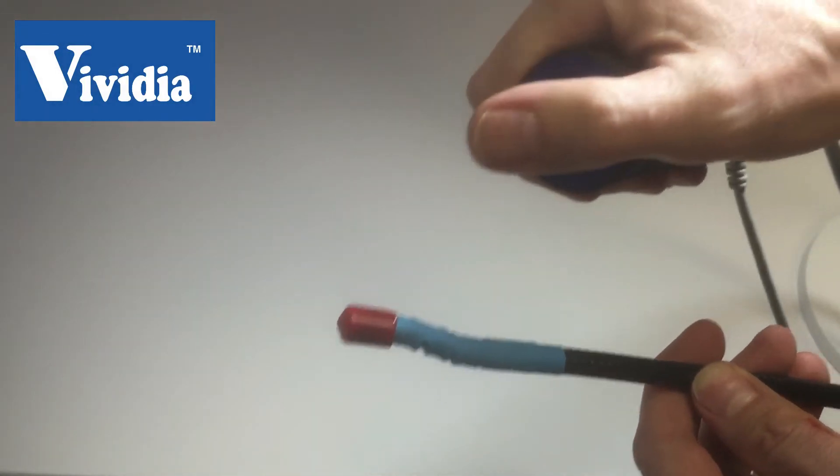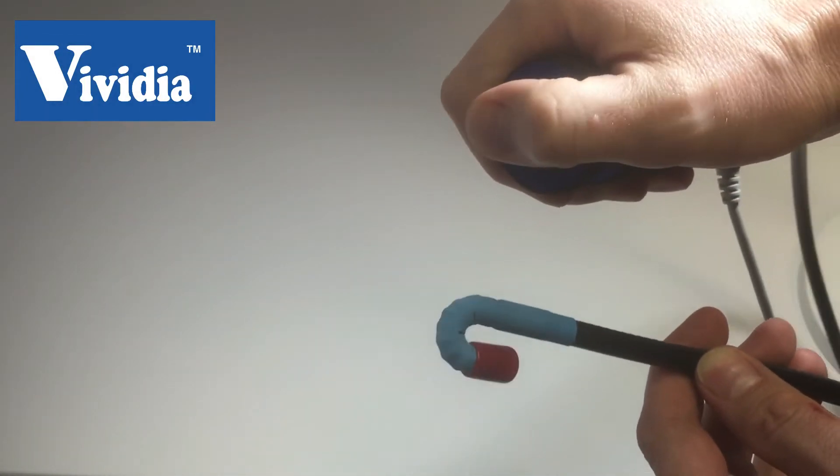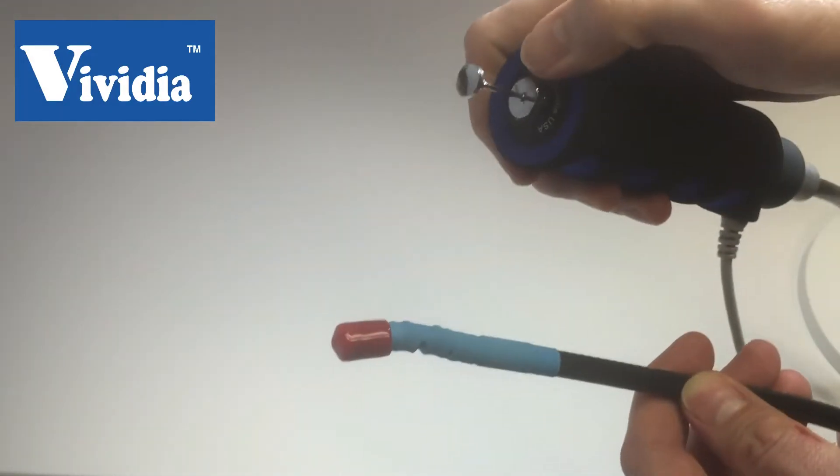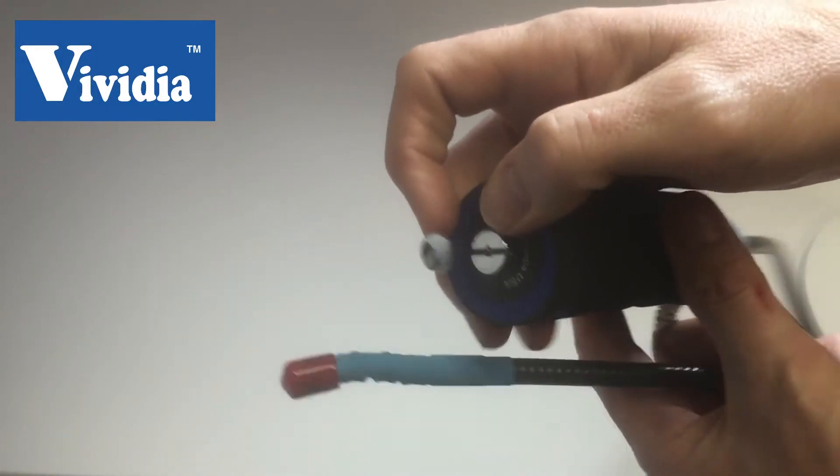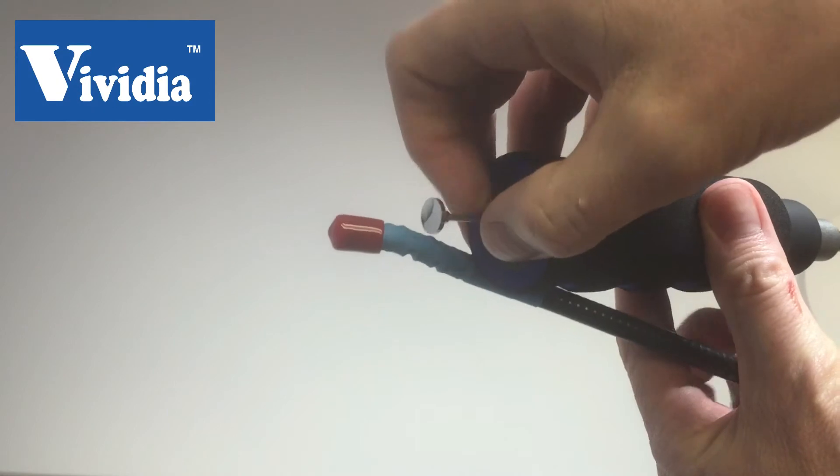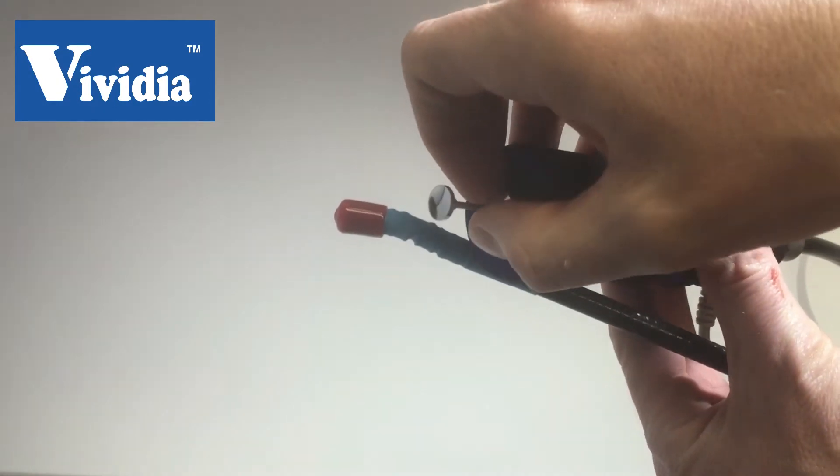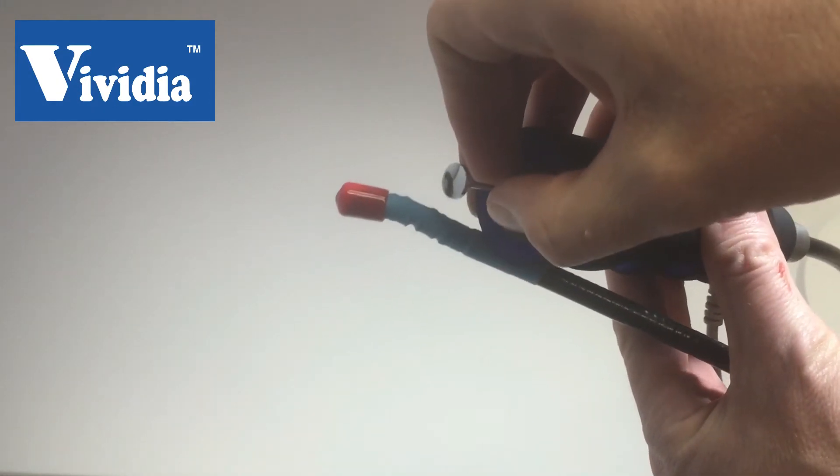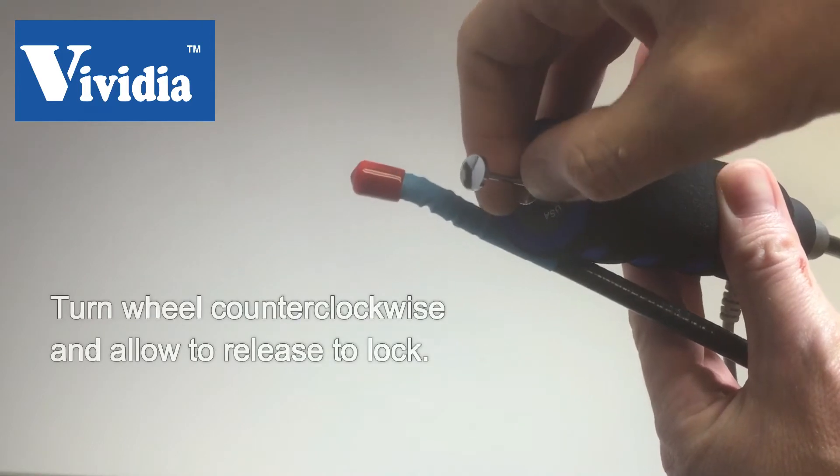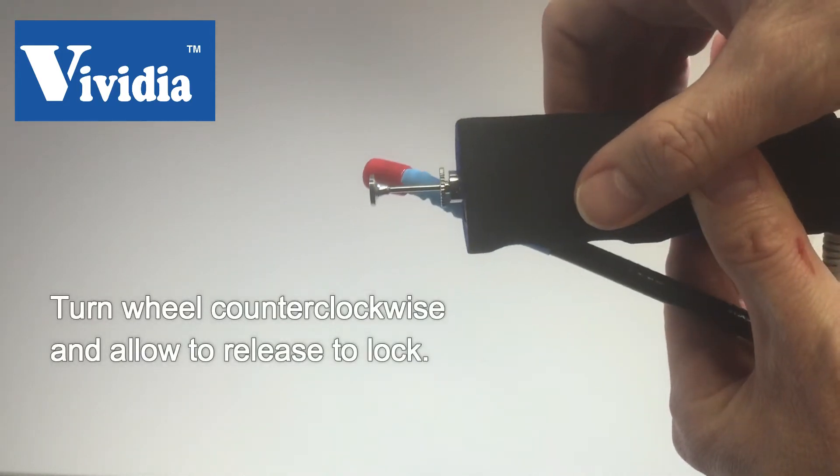I'll show you how it works here. As you can see by pressing this you have the articulation. Now if you want to lock the scope itself, what you want to do is take the wheel here and just get your thumb and forefinger, turn it slightly to the left and just let it release. You can see the wheel